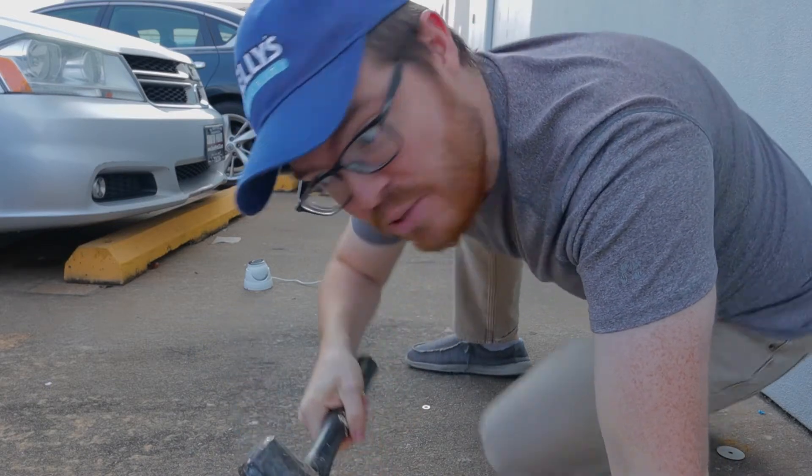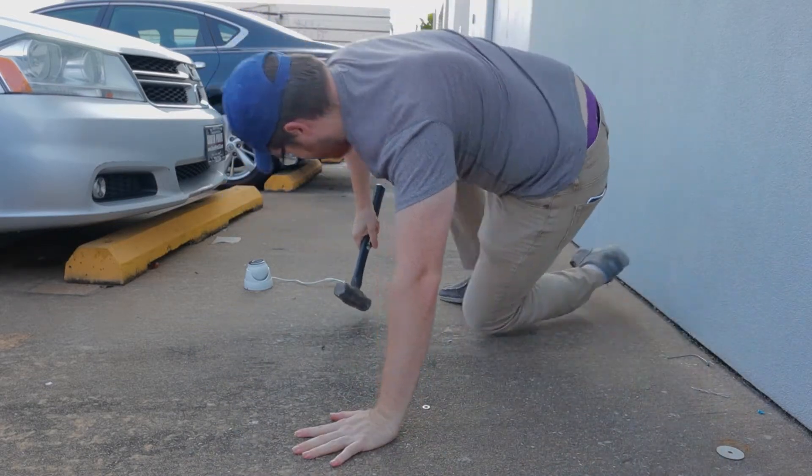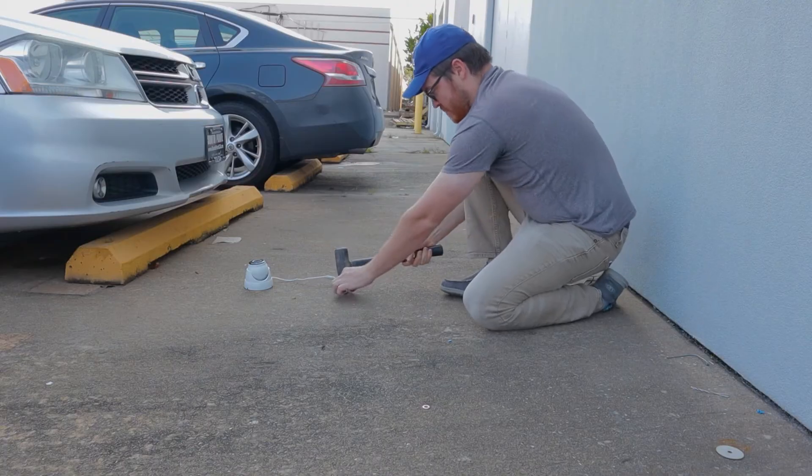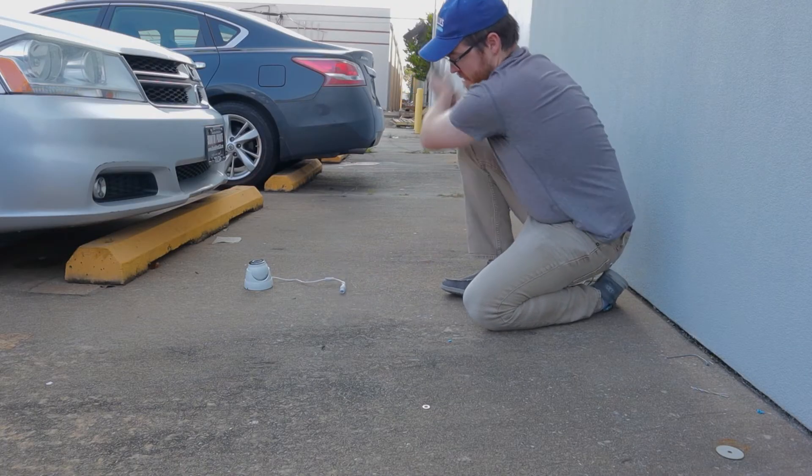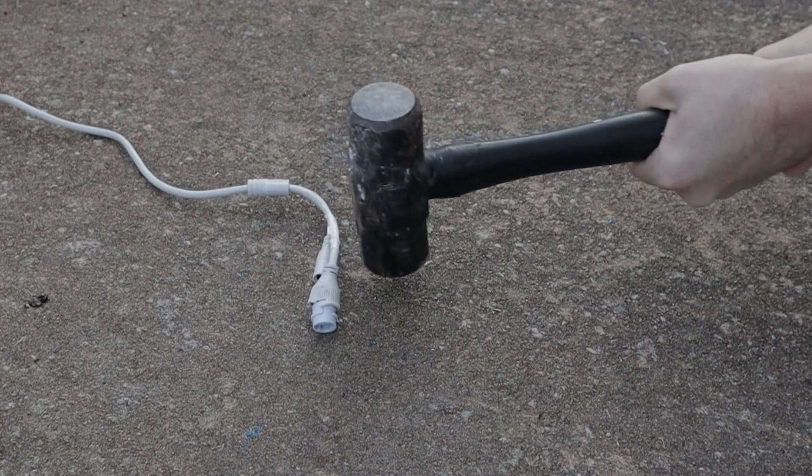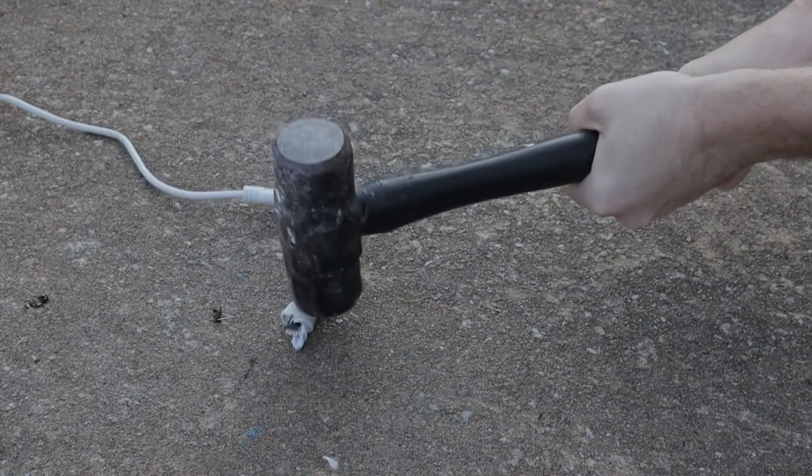Alright kids, don't try this at home. Well that sucks. My RJ45 connection is destroyed. My warranty is voided now so I'm stuck with this camera. But the good news is there is a simple fix. So let's head inside and I will show you what to do when you have a damaged RJ45 connection on your security camera.